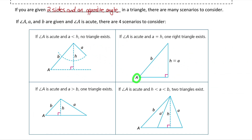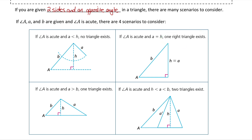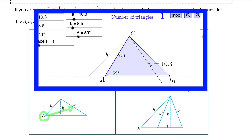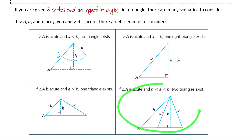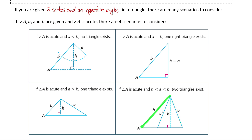In the second scenario, if side A is actually equal to the height of the triangle, then there's only one triangle that exists, and it's a right angle triangle. In the third scenario, if side A is bigger than the other known side — if A is bigger than B — then only one triangle exists. In the fourth scenario, if side A is bigger than the height but less than the other known side, there are actually two possible triangles. So if A is bigger than the height but less than B, we have to consider the ambiguous case of sine.